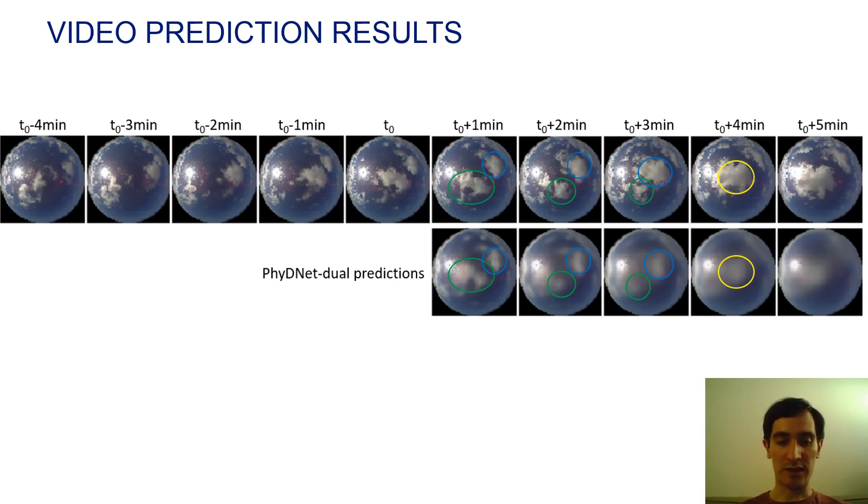The two clouds that are depicted in blue and green are moving closer and then finally merging into the yellow cloud. And even if the PhyDNet Dual predictions are a little bit blurry, we observe that the model is able to predict this behavior. So it confirms the benefits of our physically constrained prediction.